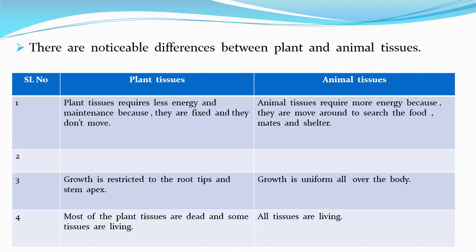Animals, on the other hand, move around to search for food, for mating, reproduction, and for shelter. Growth in animals is uniform all over the body, and almost all animal tissues are living. Therefore, animal tissues require more energy for their maintenance compared to plant tissues, because plants are fixed and their growth is restricted to roots and stems.